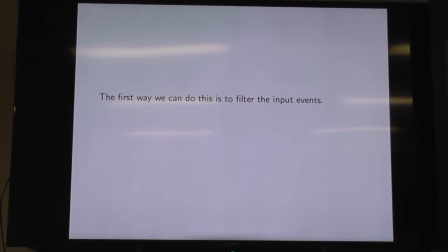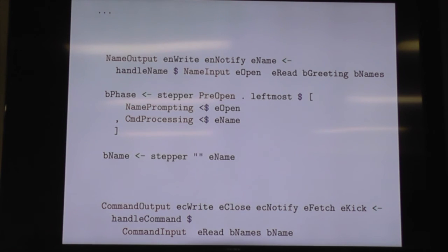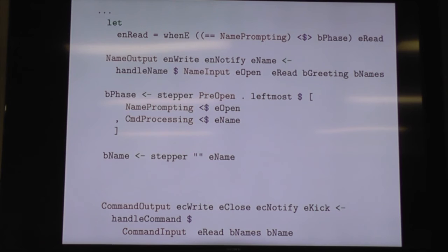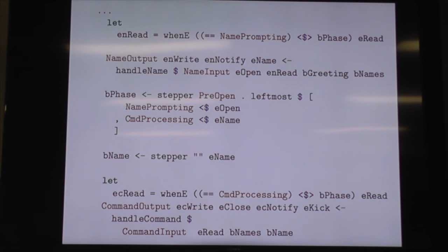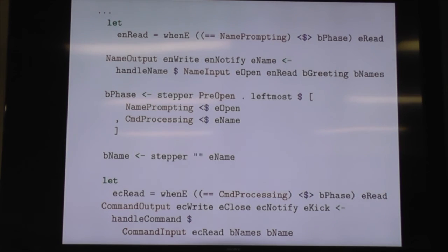The first thing we can do is just filter the inputs — don't always pass the read through. So with our partial monstrosity from before and recursive do, we can create a little data structure talking about where we are in the process: pre-open, name prompting, command processing. We accumulate state on the name prompting and command processing, then build a filtered version of read based on that state. If we are name prompting, we have this read input and we make use of it in our name component. Same thing if we are command processing — pass the read through and use it in our command input. So we just filter the inputs based on state.